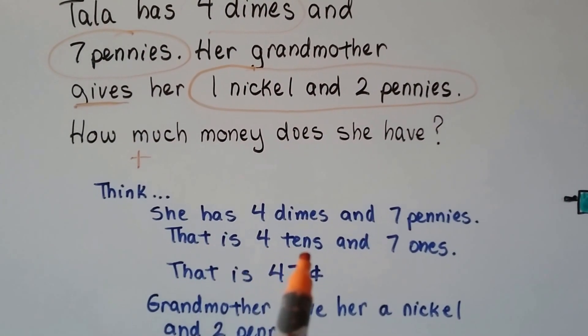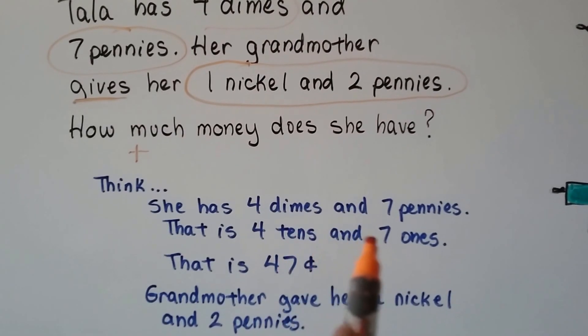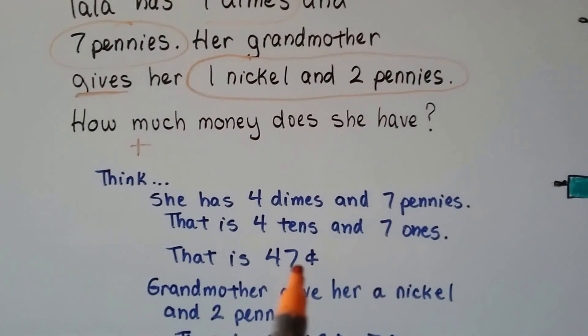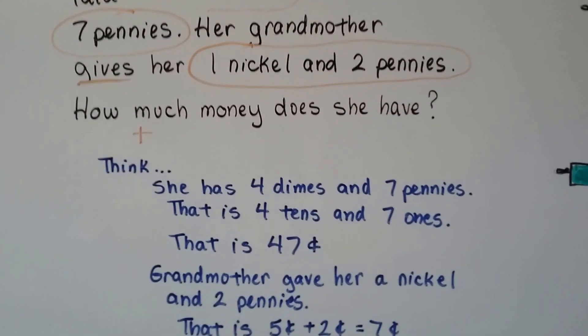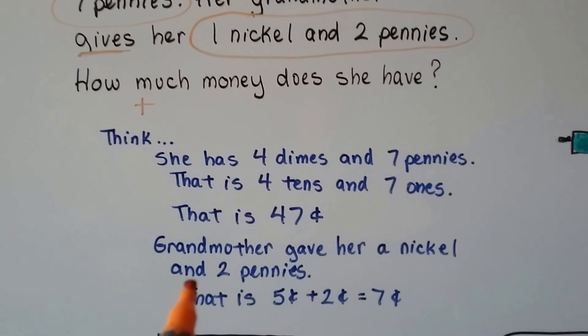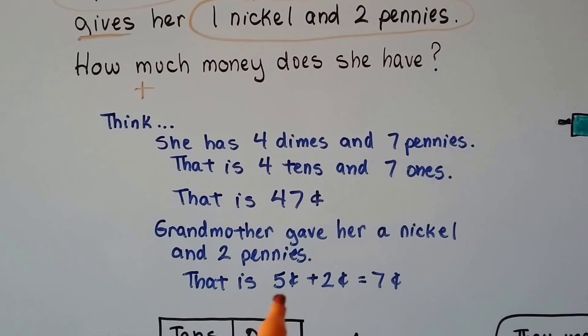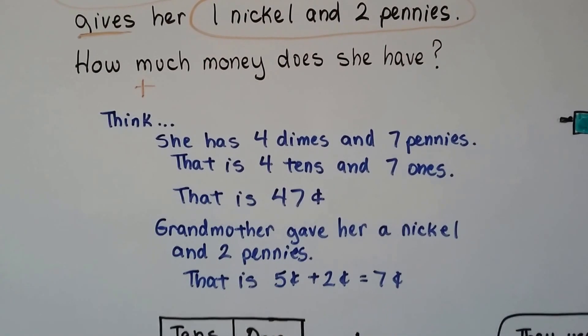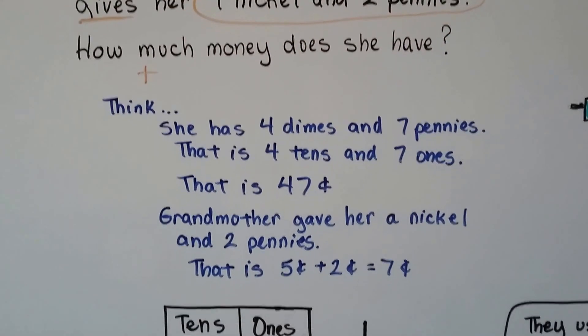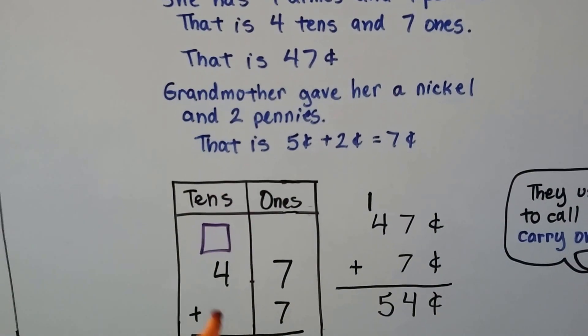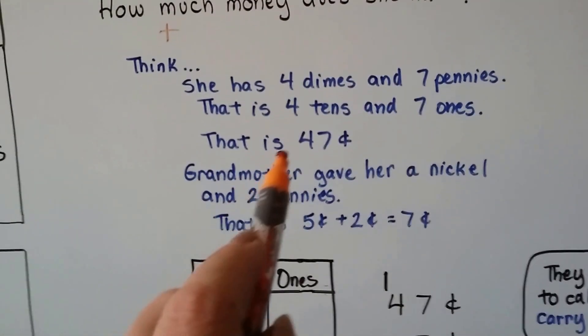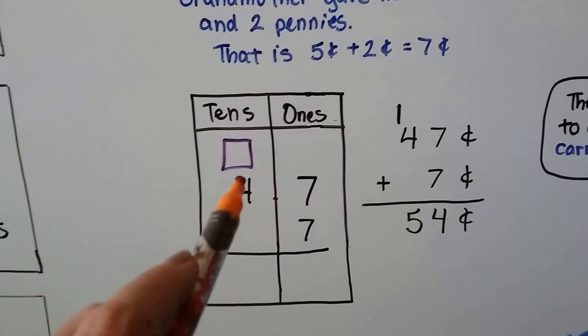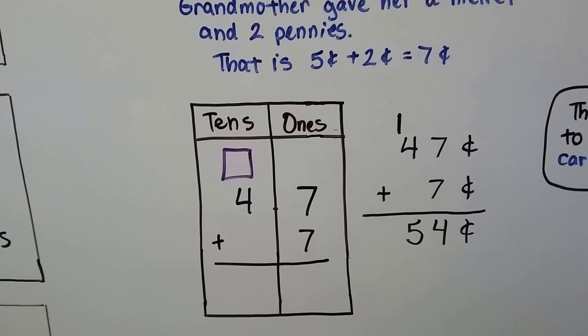Well, that's 4 tens, because a dime is 10, and 7 ones, because pennies are ones. So that's 47 cents. 4 tens, 7 ones. And grandmother gave her a nickel and 2 pennies. A nickel is 5 cents, and 2 pennies is 2 cents. So grandmother gave her 7 cents. So she had 47 cents, and we need to add 7 cents. 47 plus 7.